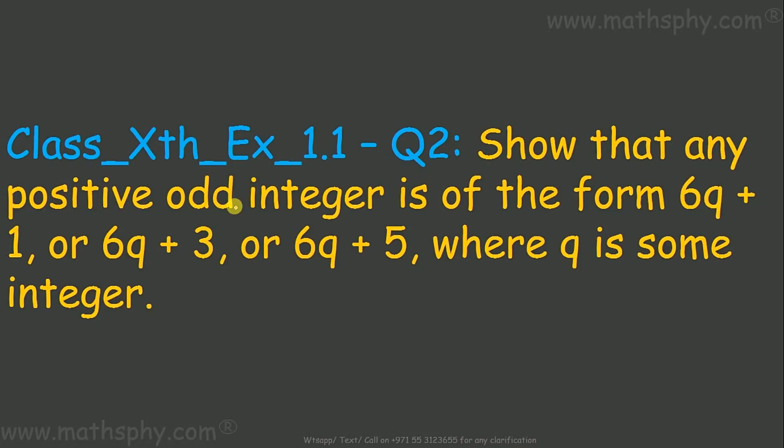I assume we know about integers, and by any chance if we do not know, then let's go back and look into my previous videos of number systems where I have explained what is an integer. Okay, this question here says we have to show that any positive odd integer is in this form: 6q+1, 6q+3, or 6q+5, where q is some integer.